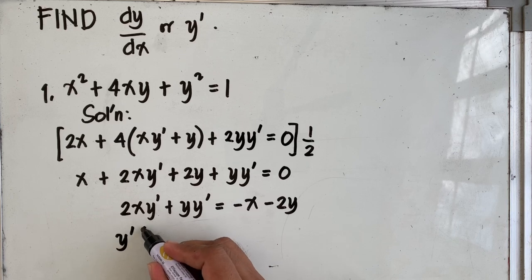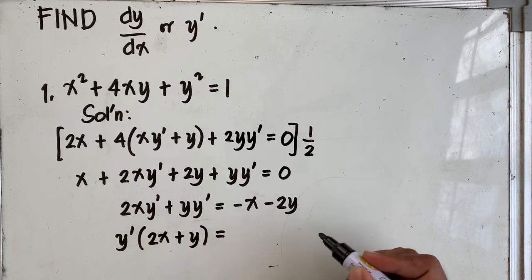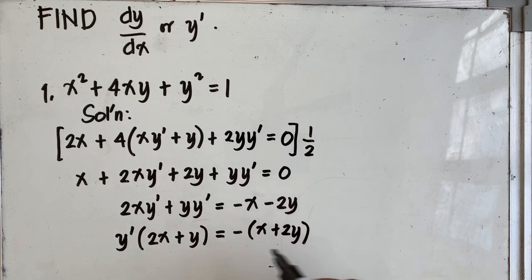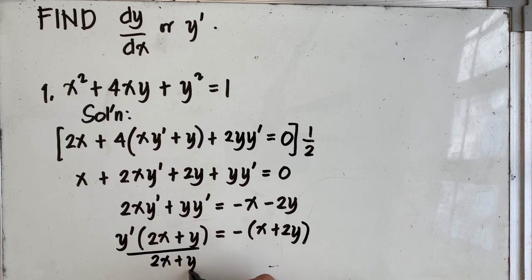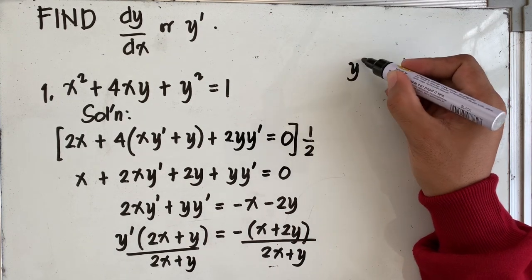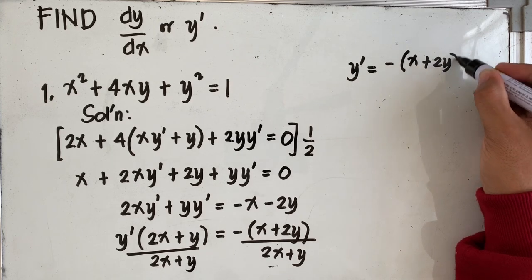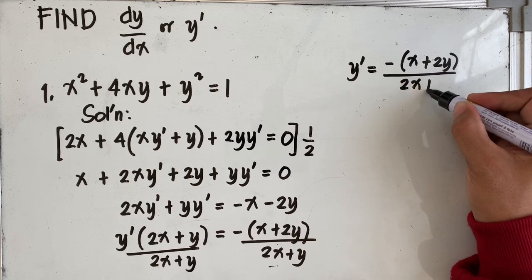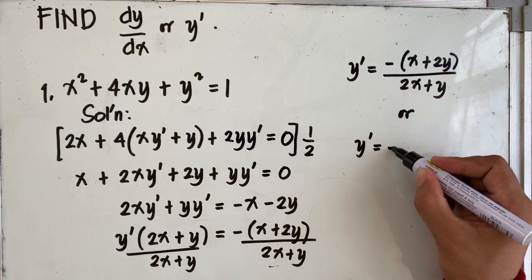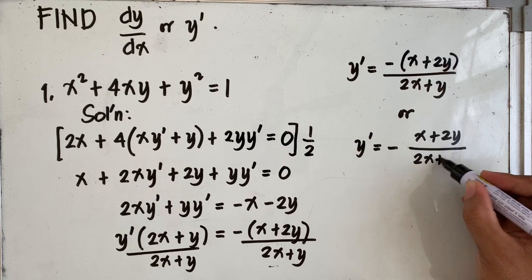Factoring out y prime at the left side of the equation, we have y prime times 2x plus y equal to, factoring out the negative sign, and finally dividing both sides by 2x plus y. We now have the final answer: y prime is equal to negative x plus 2y over 2x plus y. That's problem number 1.